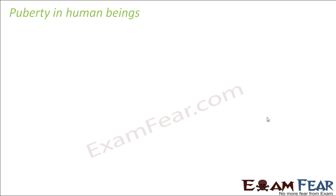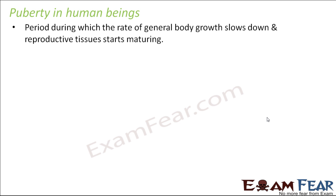Only after a human being attains puberty has he or she entered into the reproductive phase of life — meaning that person is now capable of reproduction. Puberty is that period during which the rate of general body growth slows down and reproductive tissues start maturing.